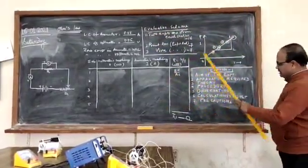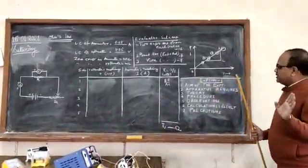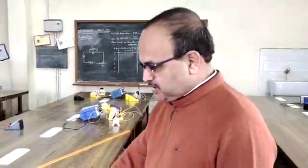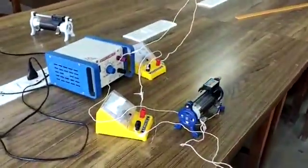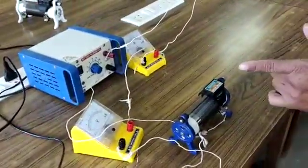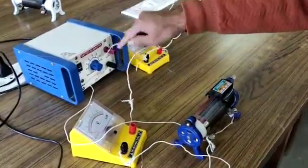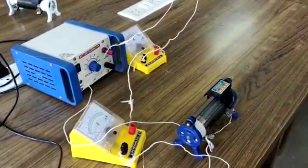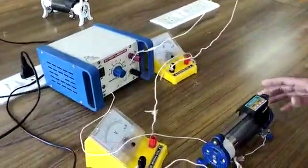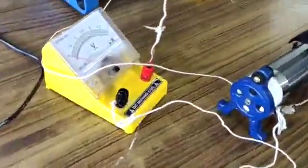Now I am going to demonstrate this experiment — how to perform it in the lab. See, all the elements are here. Compare this circuit with the circuit diagram: this is the battery eliminator, the red terminal is positive and the black one is negative. It is connected to the ammeter, and across the terminals of the voltmeter there is the resistance wire.